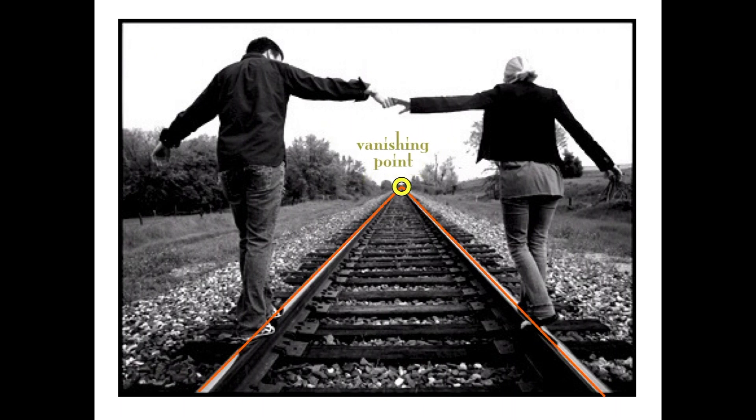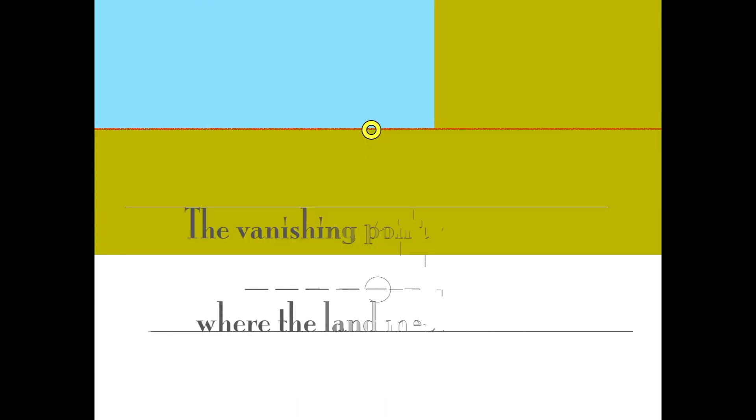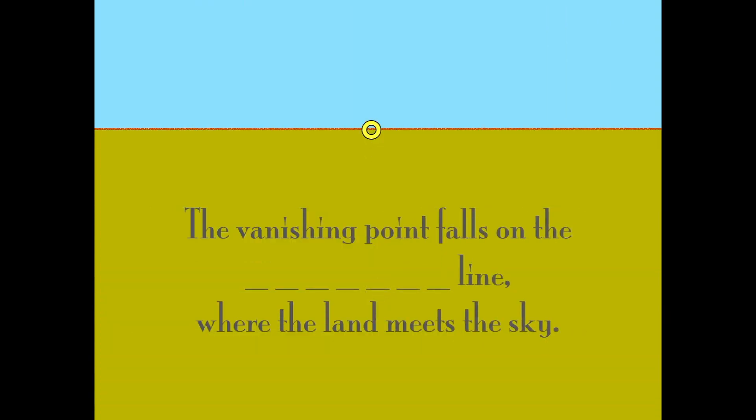And the place where they meet is called the vanishing point because it looks like everything vanishes or disappears beyond that point. And the vanishing point always falls on the line where the land meets the sky, which is called the horizon line.